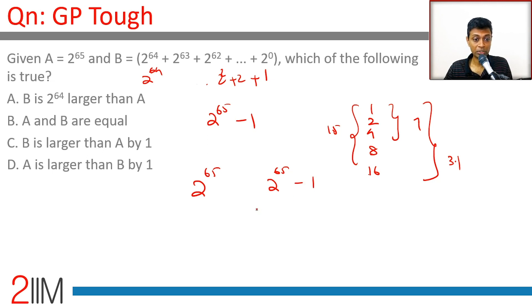A is 2^64 larger than A, wrong. A and B are equal, wrong. B is larger than A by 1, wrong. A is larger than B by 1, that's the right answer.